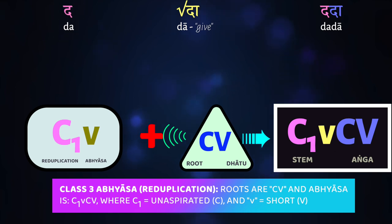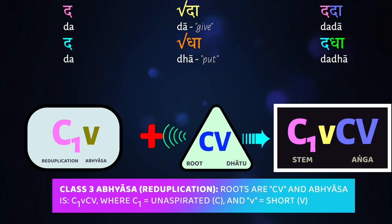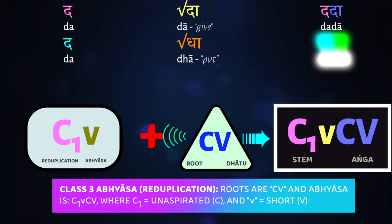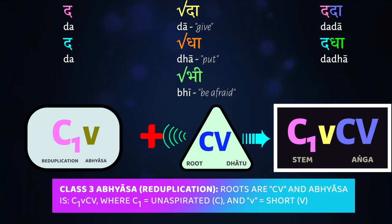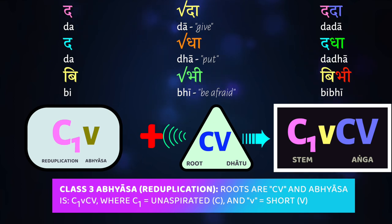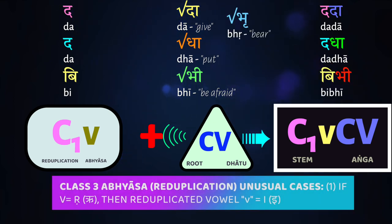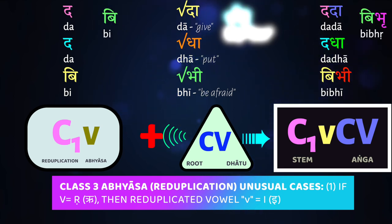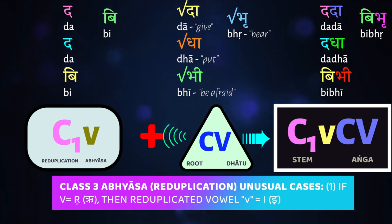The first vowel gets shortened from ā to a. For dhā, meaning 'to place or put,' we lose the aspiration of the consonant, going from dhā to da-kara, and the vowel reduces from ā to short a, giving us da-dhā. Similarly, for the root bhī, meaning 'to be afraid,' the shortened version is bi-bhī, where the long ī shortens to short i (i-kara), and the bha-kara loses its aspiration to become the ba-kara, giving us bi-bhi as the abhyasa. When the vowel is a vocalic ṛ, it shortens to a short i — so for the root bhṛ, meaning 'to bear or hold up,' the reduplicated prefix loses aspiration and the vocalic ṛ reduces to short i, giving us bi-bhṛ.